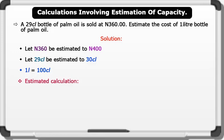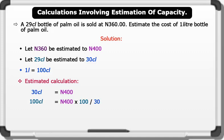Now let's see the estimated calculation. If 30 centiliters equals 400 Naira, then 100 centiliters equals 400 times 100 divided by 30. This gives us an estimated value of 1,333 Naira.